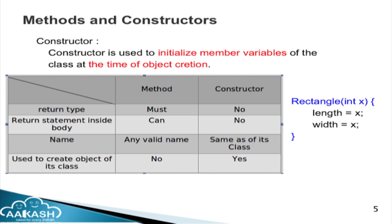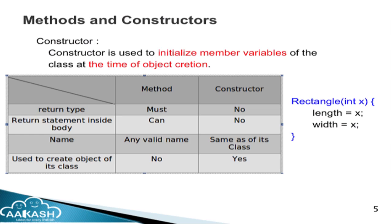Next we have methods and constructors. In the previous session you learned what a method is, but what is a constructor? A constructor is used to initialize the member variables of the class at the time of object creation. Instead of having a method like setData for initializing length and width, we can have a constructor which initializes both member variables at the time of object creation.